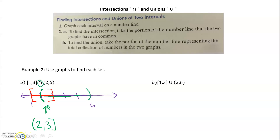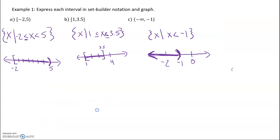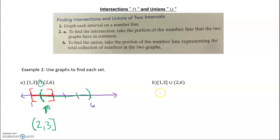Now let's do the same thing for the union using those same two intervals. Union means everything, so we want both intervals on the graph. Looking back, that means we're going from 1 all the way to 6. And 1 is included while 6 is not, giving us [1, 6).